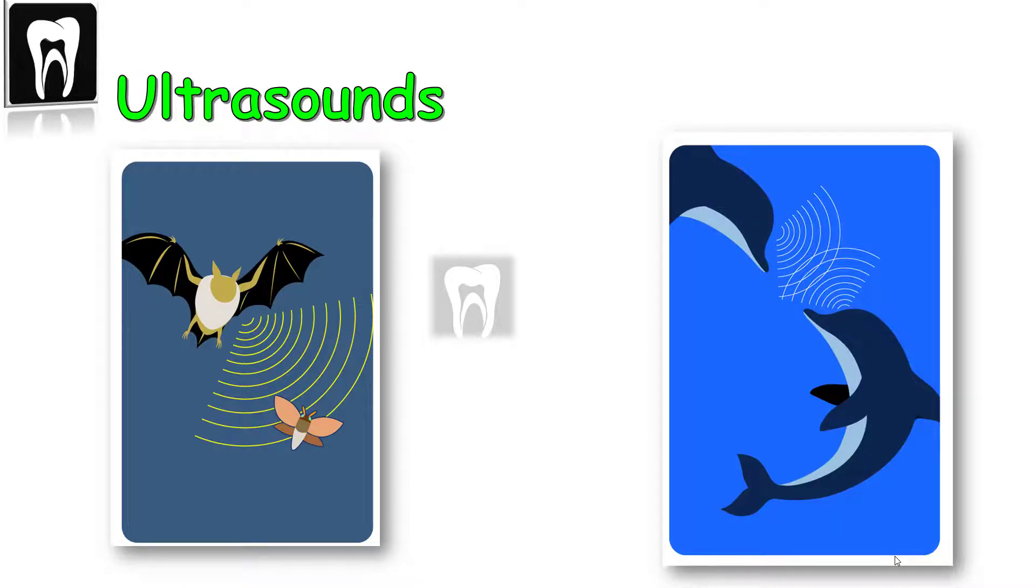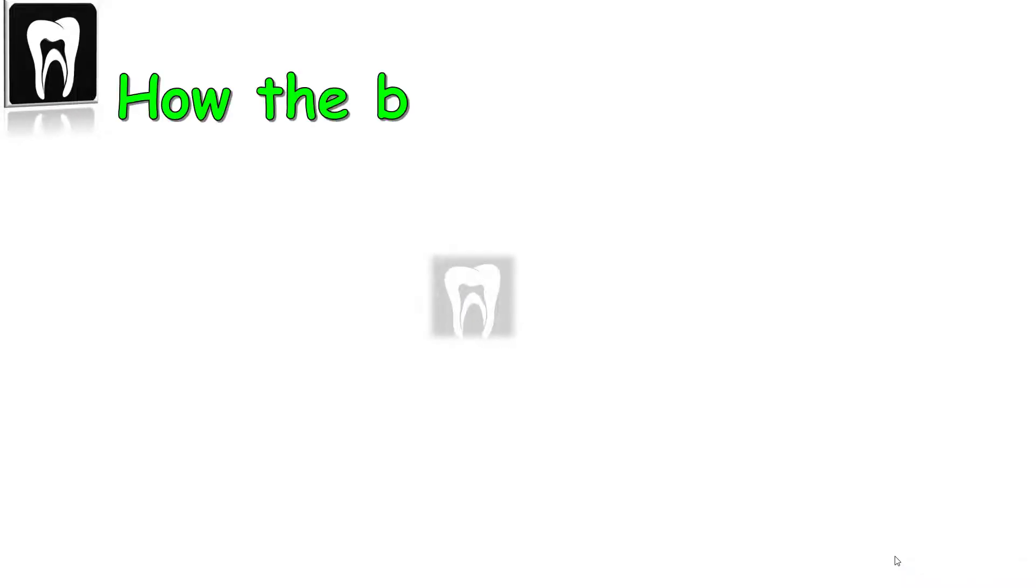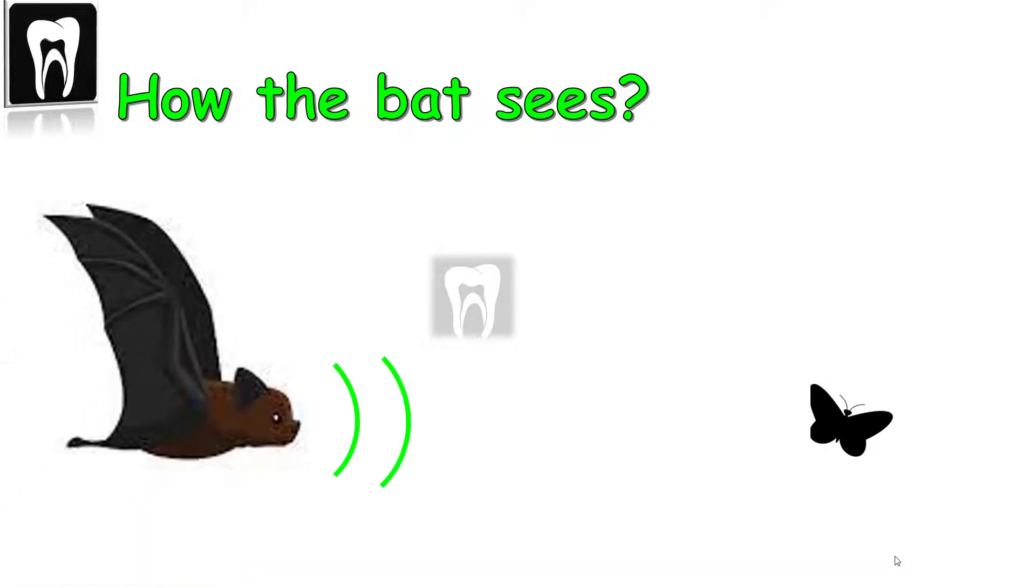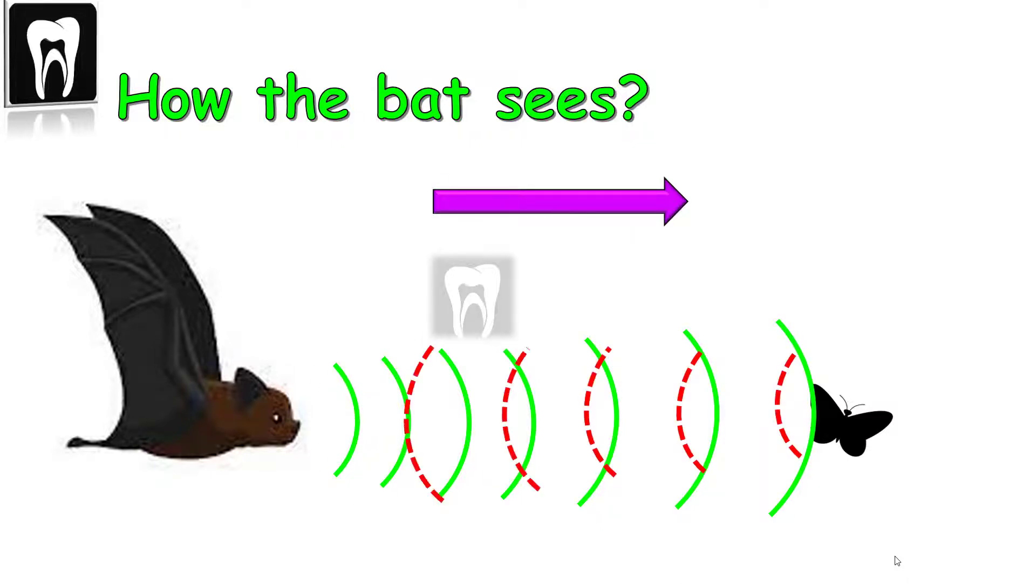Bats are gifted with a system of locating things with sound. This guy can make and hear this high frequency sound. When it's dark, the bat produces an ultrasound wave. It hits the nearby surface and bounces back. The direction from where the sound returns tells it the direction of the object.